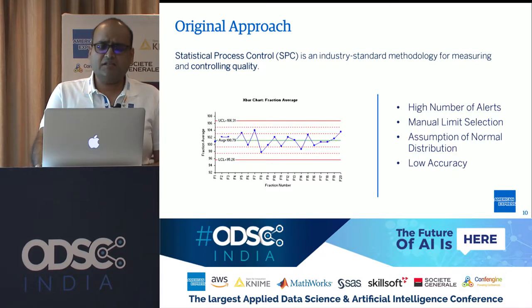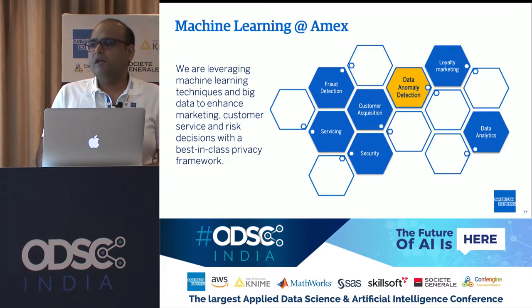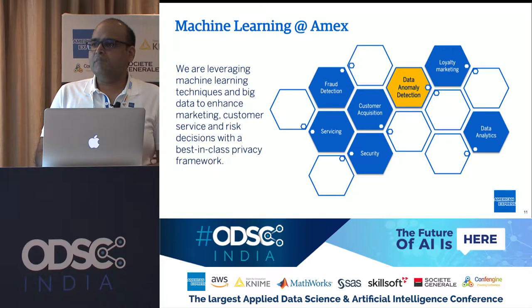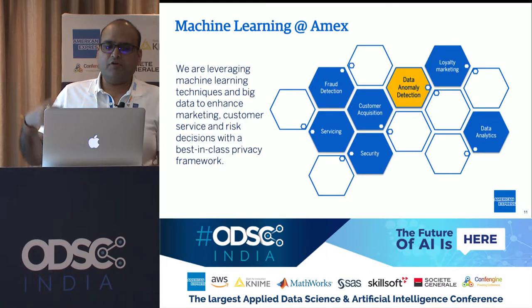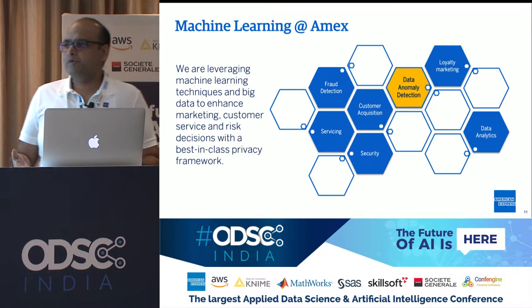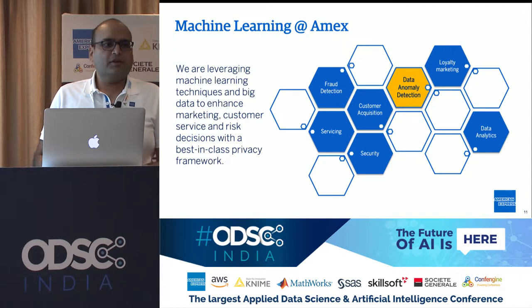So we thought: as a company, American Express is pioneering machine learning. We started this journey in 2013 by setting up an AI lab in Bangalore. From 2014 itself, we started using machine learning models in fraud detection, servicing, and customer acquisition. Today, machine learning is the backbone of almost every decision happening at American Express. So we thought: why not leverage it for data anomaly detection and see how it can help us in this entire journey?